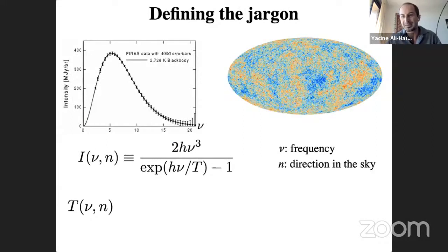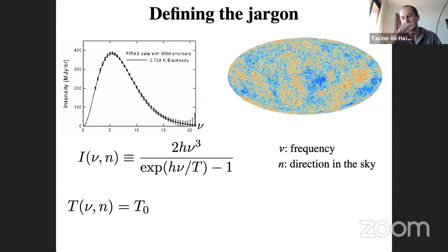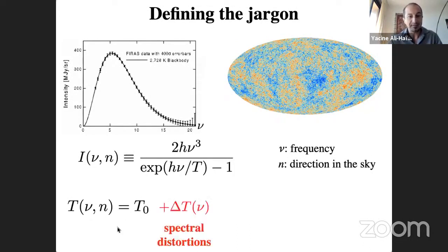Let me define the jargon. The CMB is radiation whose specific intensity we can measure as a function of frequency and direction. We can define a temperature function T that depends on frequency and direction. If T is a constant, we have a perfect blackbody CMB monopole, measured to be 2.73 K with 10⁻⁴ accuracy by FIRAS.